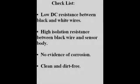If the DP-15 has low DC resistance between the black and white wires, has a high isolation resistance between the black wire and the metal case, has no evidence of corrosion on the lid welds and has been cleaned of any dirt or contaminants, it can be reassembled and calibrated.